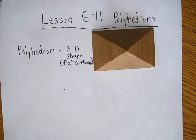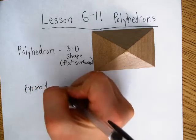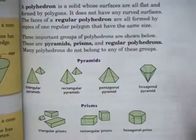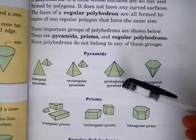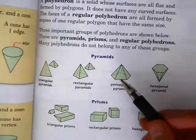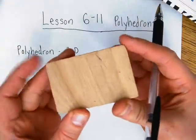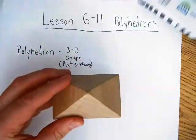The next vocabulary word is pyramid. Here are some examples of pyramids. There's a triangular pyramid, a rectangular pyramid, a pentagonal pyramid, and a hexagonal pyramid. How the pyramid is named has to do with the shape of the base. So if we look at this shape I have here, it's a pyramid where the base is a rectangle, so this would be called a rectangular pyramid.